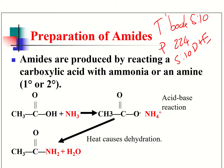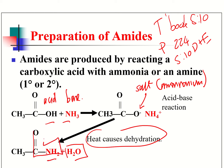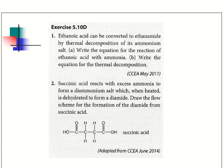Back when we did carboxylic acids, we looked at the acid-base reaction between carboxylic acids and ammonia, and you should know that you get the ammonium salt — the ammonium salt of the carboxylic acid. To turn that into the amide, you simply carry out some heating, get a dehydration, and you get the amide. This is the functional group of an amide.